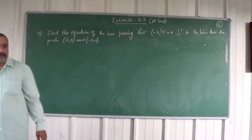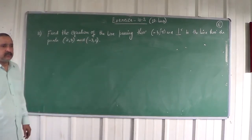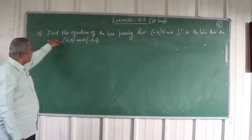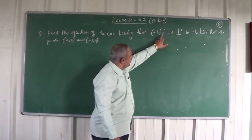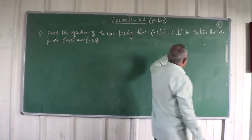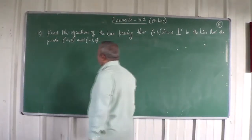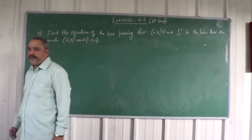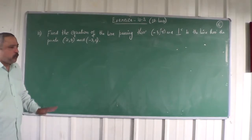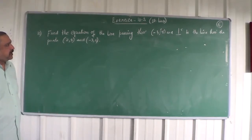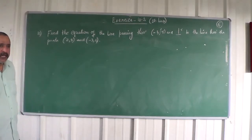Now, problem 10 of exercise 10.2 on straight lines. Find the equation of the line passing through the point (-3, 5) and perpendicular to the line through the points (2, 5) and (-3, 6). You have to find the equation of a straight line passing through (-3, 5) and it is perpendicular to the line through the points (2, 5) and (-3, 6).